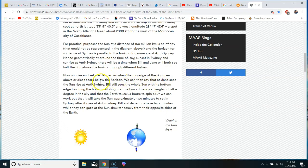Now, he points out sunrise and sunset are defined as when the top edge either rises above or just disappears below the horizon. So, we can then say that as Jane sees the sun rise at Anti-Sydney, Bill still sees the whole sun with its bottom edge touching the horizon. As Bill starts to see that sun actually set behind the horizon, Jane will start to see the sun rise in Anti-Sydney. So, there will come a point when Bill is seeing half of the sun as it sets while Jane sees the other half of the sun while it rises for her.